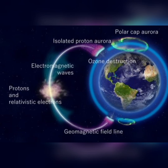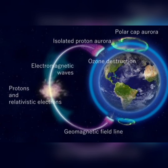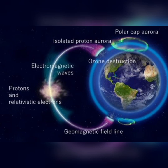Charged particles in plasma, blasted out by solar flares — solar flares are large explosions from the surface of the sun that emit intense bursts of electromagnetic radiation — and coronal mass ejections also play a role.